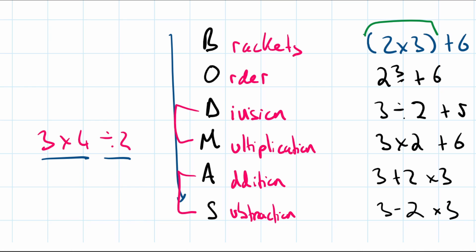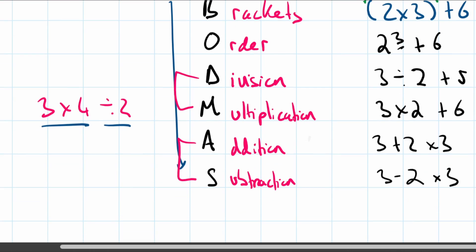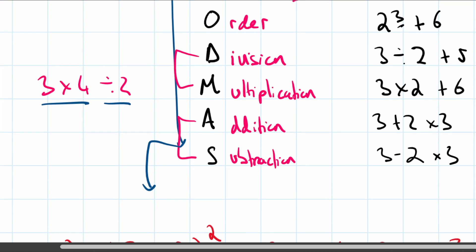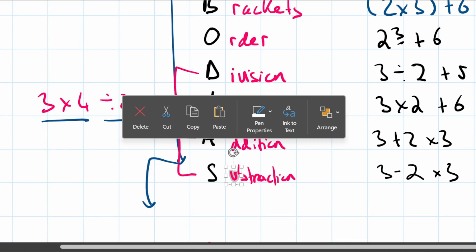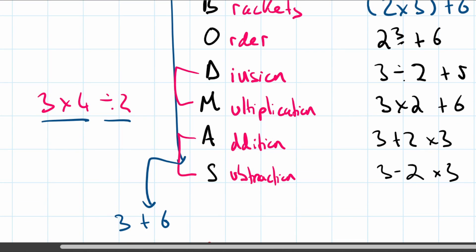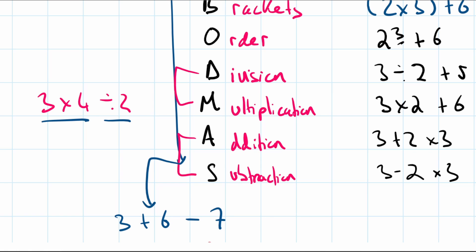The same rule applies to addition and subtraction — whichever comes first in the equation, you do that first. For example, in 3 plus 6 minus 7, you do the addition first because it comes first. This is particularly important for division and multiplication where the order can make a difference.